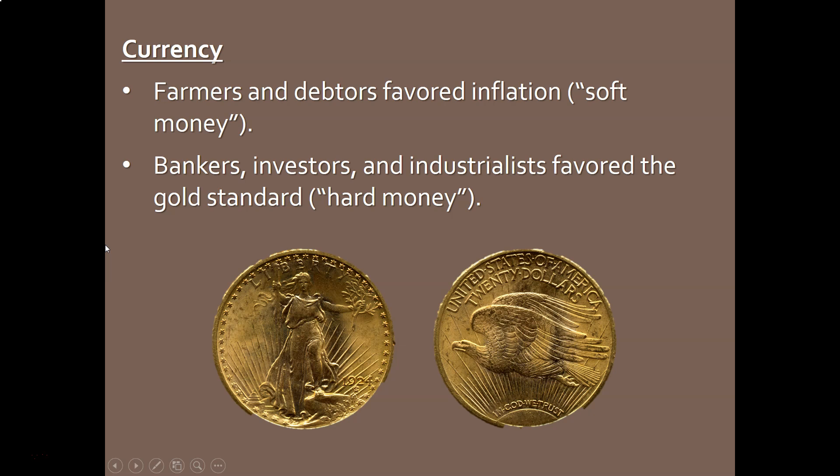The other big issue driving politics in the late 1800s was, of all things, currency. There were basically two camps. On one side were people who favored soft money — referring to inflation — putting lots of paper currency and coining silver and gold dollars to get more money into circulation, which benefits farmers and debtors. But investors, bankers, and businessmen didn't like that because inflation is bad for business. They preferred hard money, meaning the gold standard: you only have as much money in circulation as you have gold to back it up.